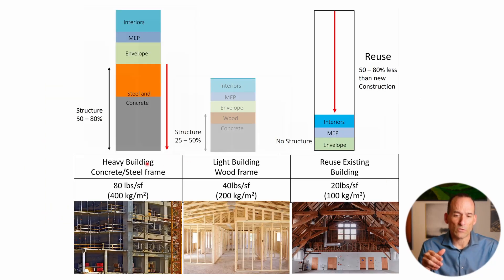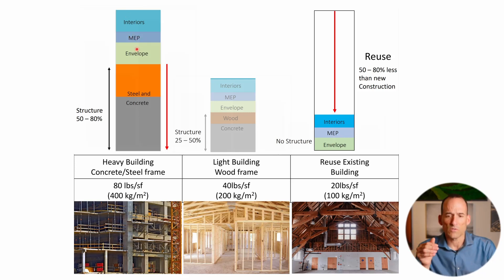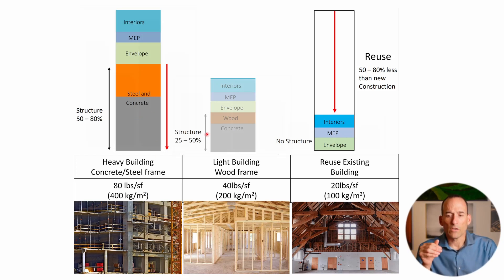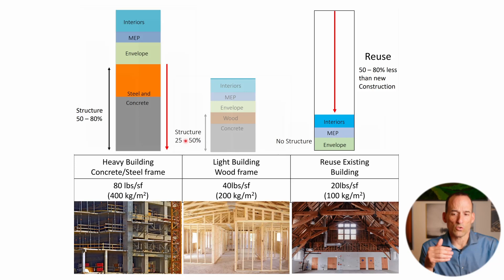If we look at a heavy building like concrete or steel, we have a lot of embodied carbon in the concrete and steel, plus some in the envelope, interiors, and mechanical, electrical, and plumbing systems — but the majority is in the steel and concrete. If we look at a light wood-frame building — standard residential construction — we actually have significantly less embodied carbon impact, with that structure carrying 25 to 50 percent less embodied carbon for the same square footage.